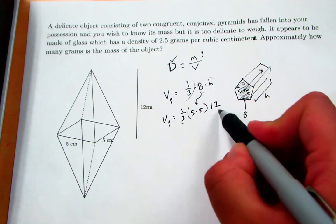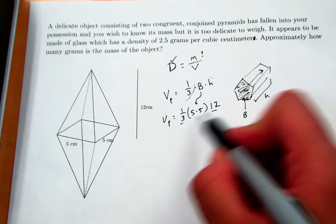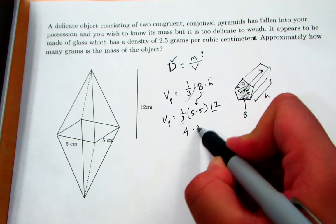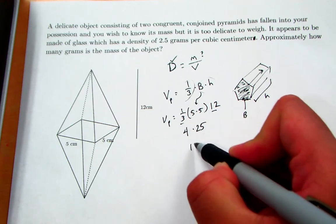Our height appears to be 12 centimeters for one of the pyramids. So let's see, a third of 12, because order does not matter when you multiply, commutative property, is four. Five times five is 25.